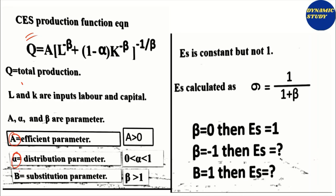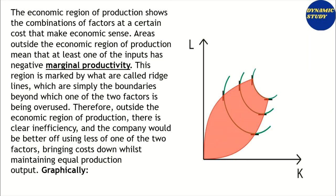In the CES function, A is the efficiency parameter, alpha is the distribution parameter, and beta is the substitution parameter. We represent the elasticity of substitution as 1 divided by (1 plus beta). So when beta is zero, the elasticity of substitution equals one. The economic region of production is a different concept which shows the combination of factors at a certain cost that makes economic sense. Areas outside the economic region mean that at least one of the inputs has negative marginal productivity.